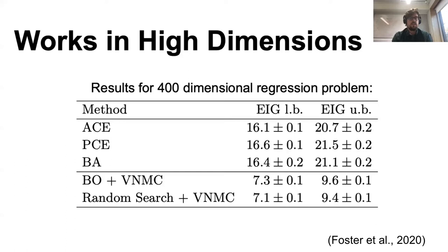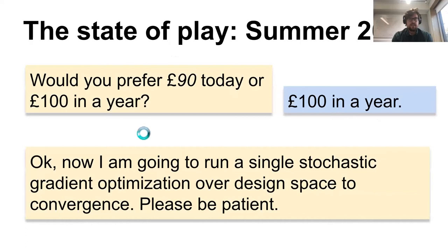At this point, we've made substantial progress — something that was very difficult to work with is now much more tractable. But we're still not there, because we need these things to run very quickly if we want to use them with human participants. Those participants are probably only willing to wait a few seconds for computation. Even something taking a few minutes — while much faster than before — is still not viable. Running stochastic gradient descent at each iteration just isn't fast enough for real-time experiments.